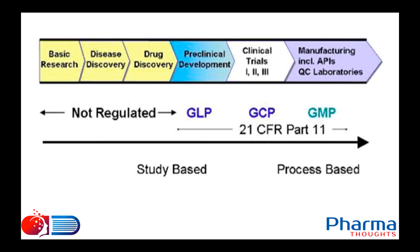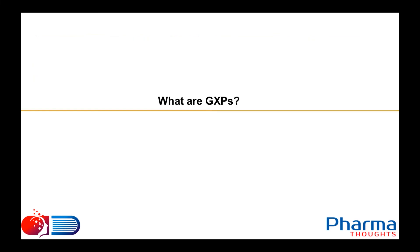Basic research, disease discovery, and drug discovery are not under any regulations. Preclinical development is under GLP regulations. Clinical trials shall be performed as per GCP requirements. Manufacturing — including APIs — and QC laboratories shall be monitored under GMP requirements. What are GXPs?